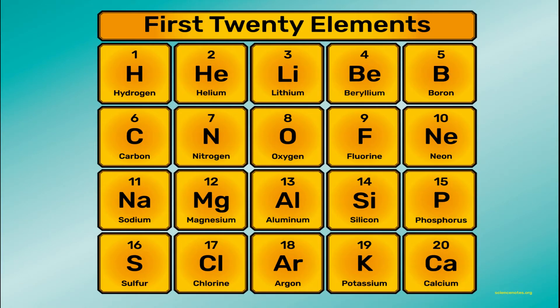Let's get some knowledge about the first 20 elements. You should be able to recall these. The first 20 elements are: Hydrogen, Helium, Lithium, Beryllium, Boron, Carbon, Nitrogen, Oxygen, Fluorine, Neon, Sodium, Magnesium, Aluminium, Silicon, Phosphorus, Sulfur, Chlorine, Argon, Potassium, Calcium.